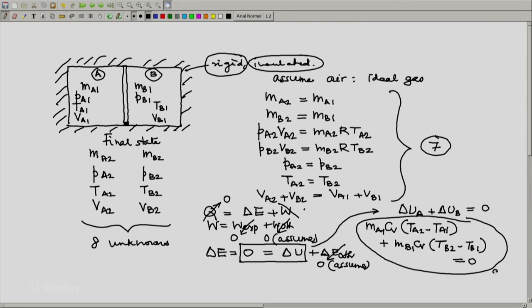So, this is equation number 8. That gives us 8 equations and 8 unknowns. That gives us the complete final state. And once you get the complete final state,